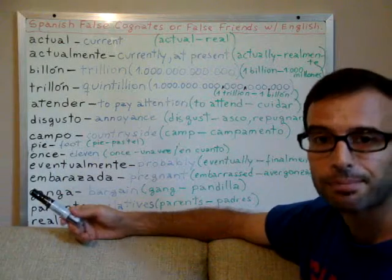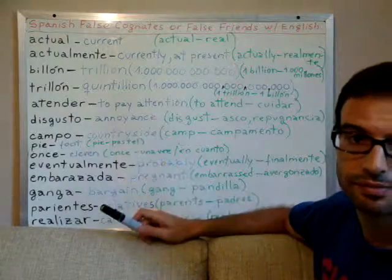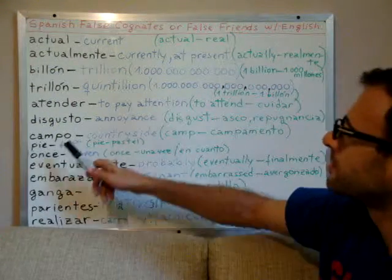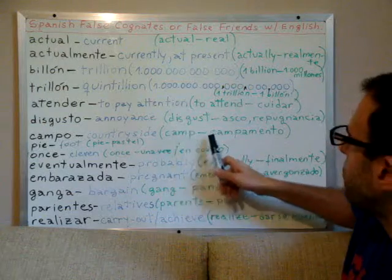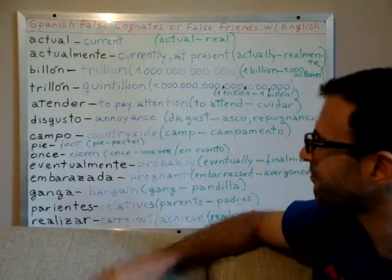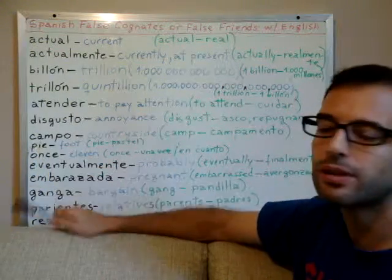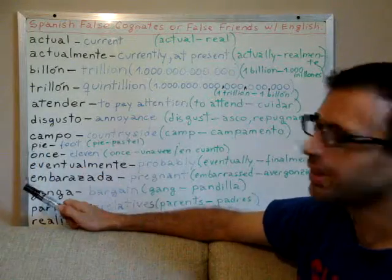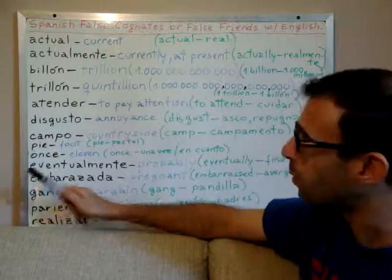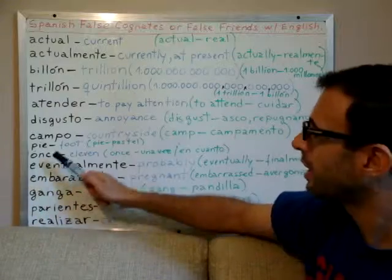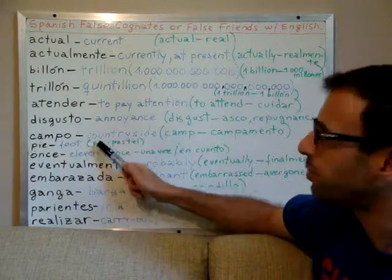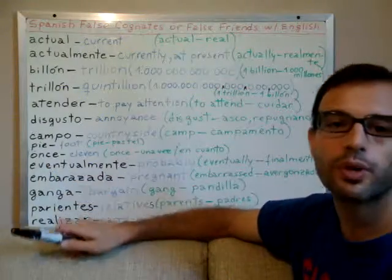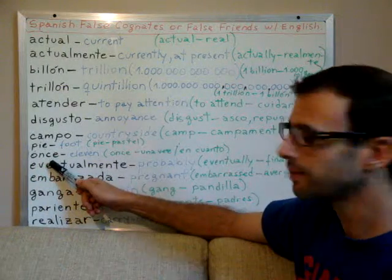'Campo' looks like 'camp,' but 'campo' means 'countryside.' Someone going to the countryside means 'alguien va al campo.' The word for 'camp' in Spanish would be 'campamento.' Now, 'pie' is written the same as the English word 'pie,' however 'pie' in Spanish means 'foot.' The Spanish word for pie the food would be 'pastel.'